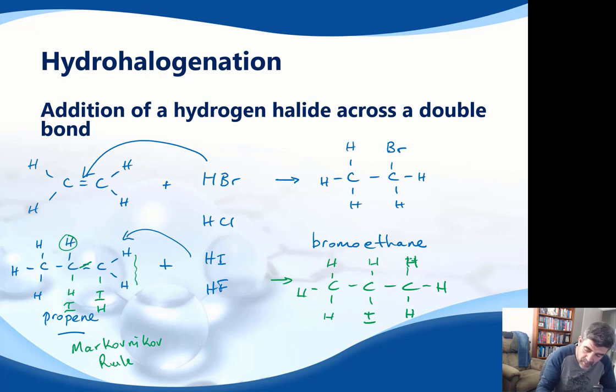So when I name the product here, it would be 2-iodopropane. Of course now the double bond's gone, so it's now gone from being an alkene to an alkane, and the iodine has gone on to the central carbon. Now if it went on to an end carbon, we would simply call that 1-iodopropane, but we just need to remember that Markovnikov's rule is going to tell us a little something about the preferred atom to which an addition reaction might occur.